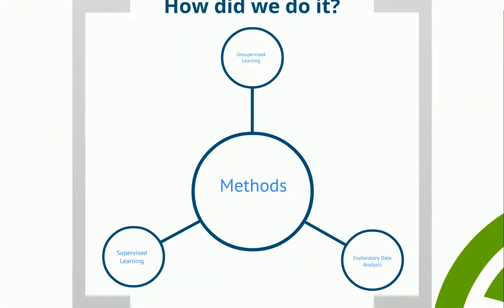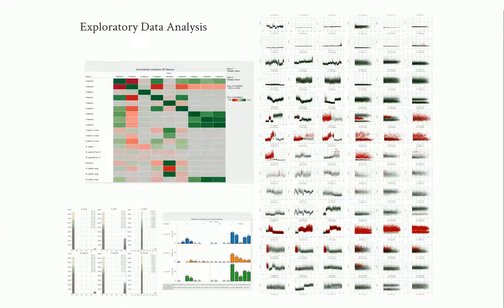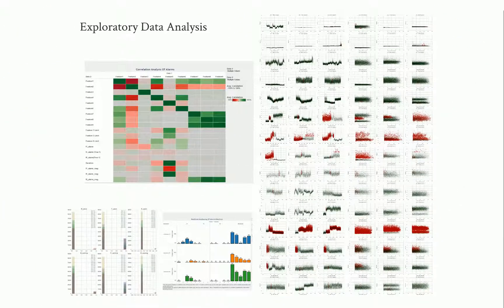To address our first problem we did exploratory data analysis. We first charted distributions of several potential features to see how they varied by machine. We found that many were relatively uniform across machines, but that some like features 3 and 4 varied more.